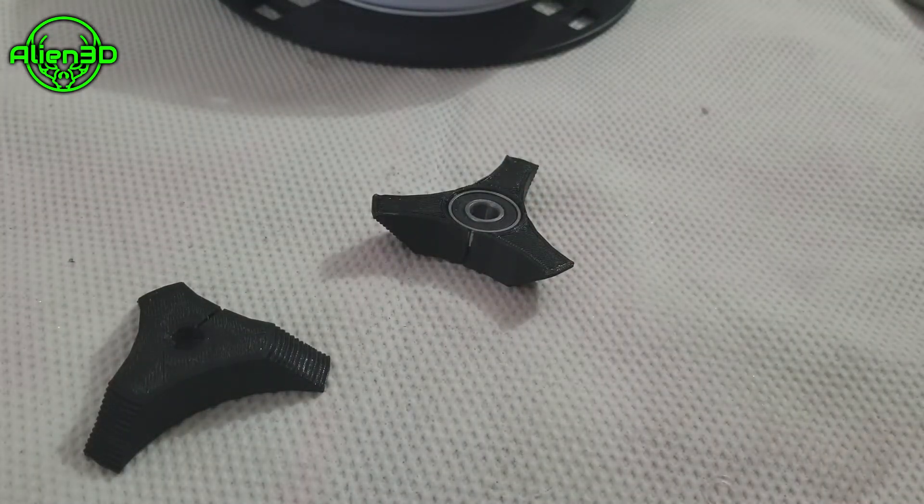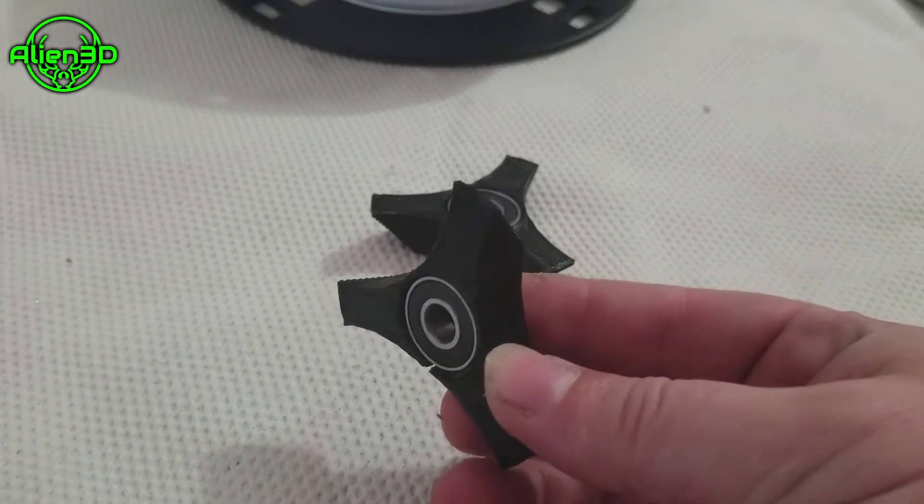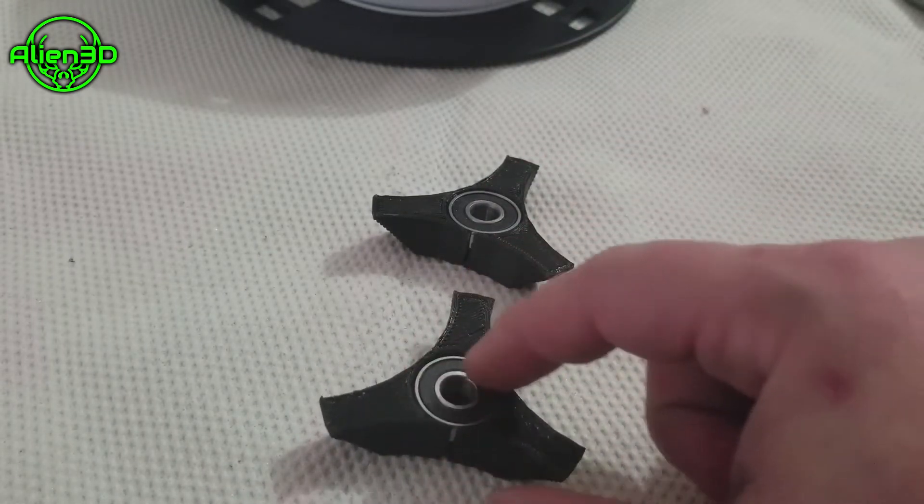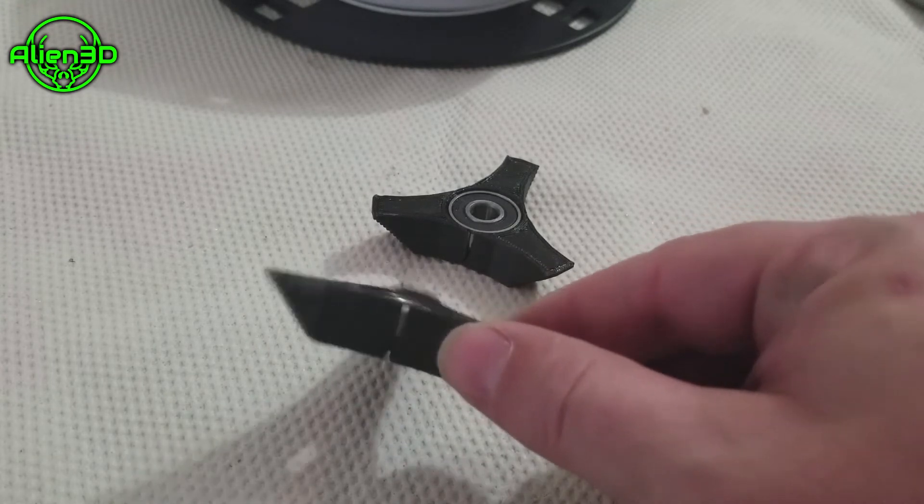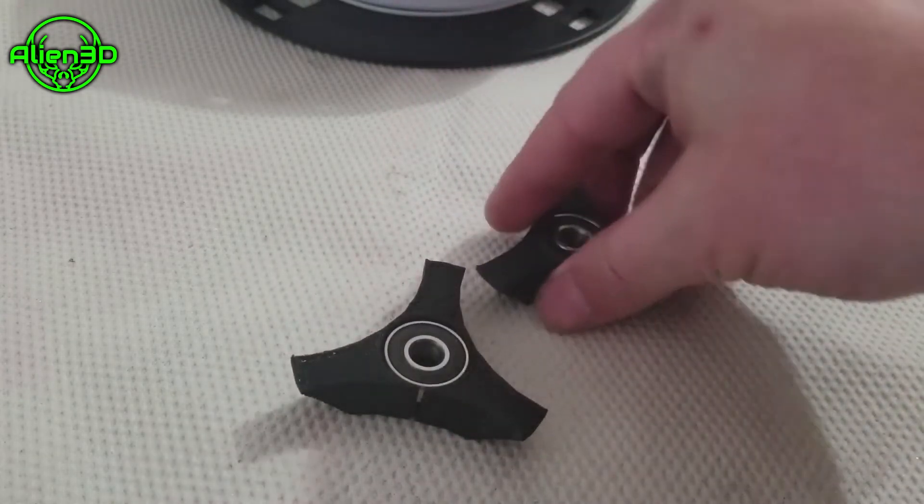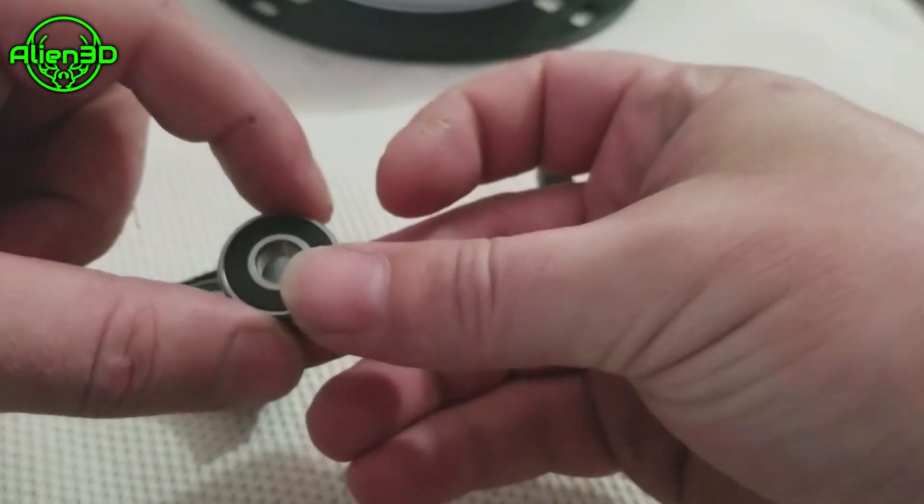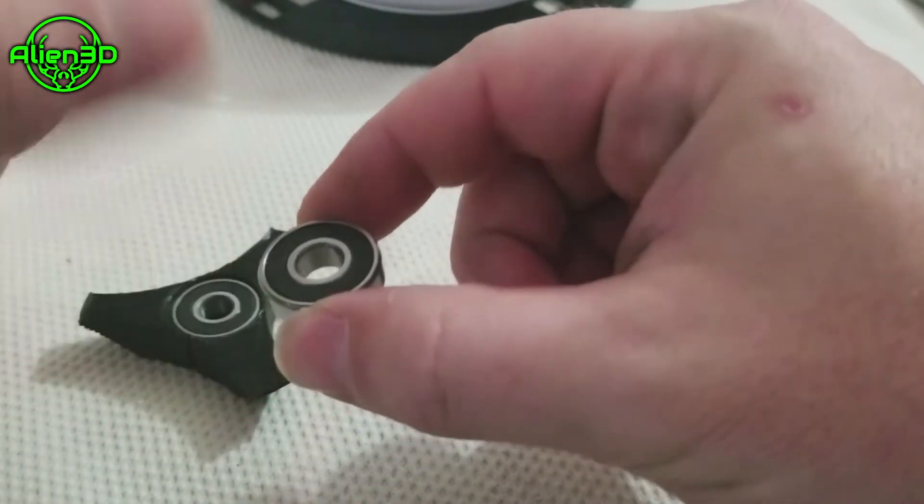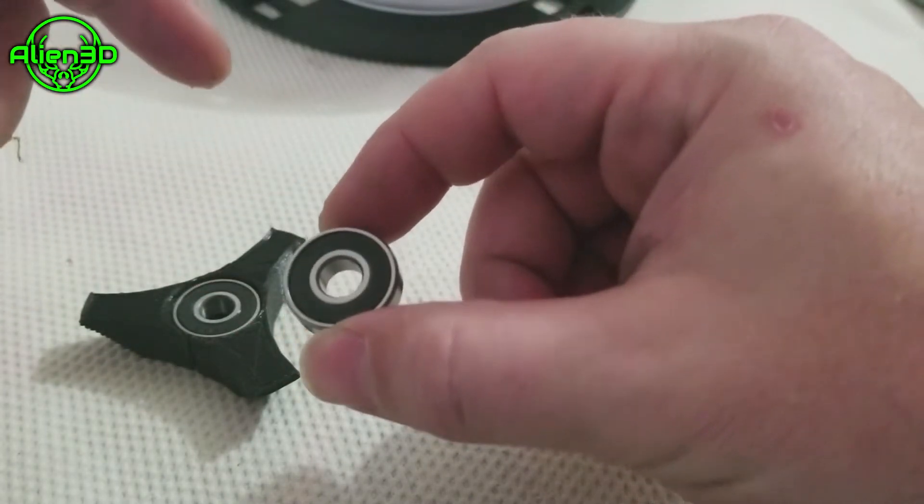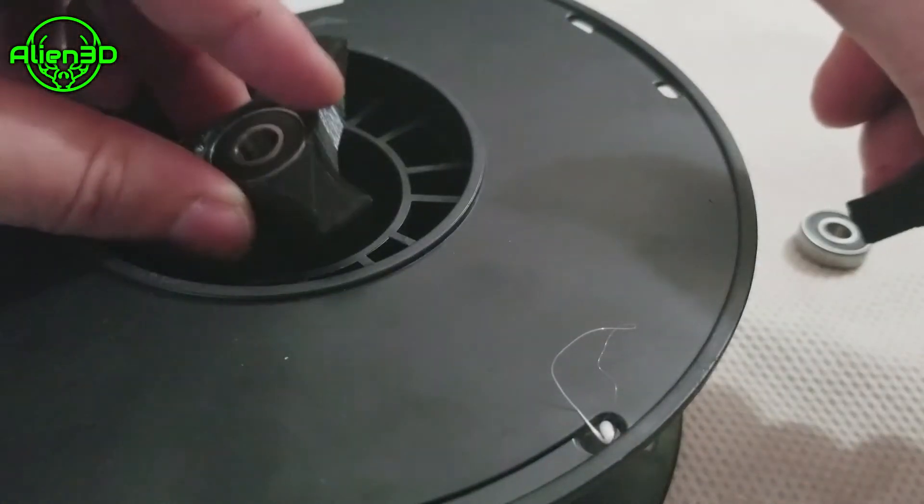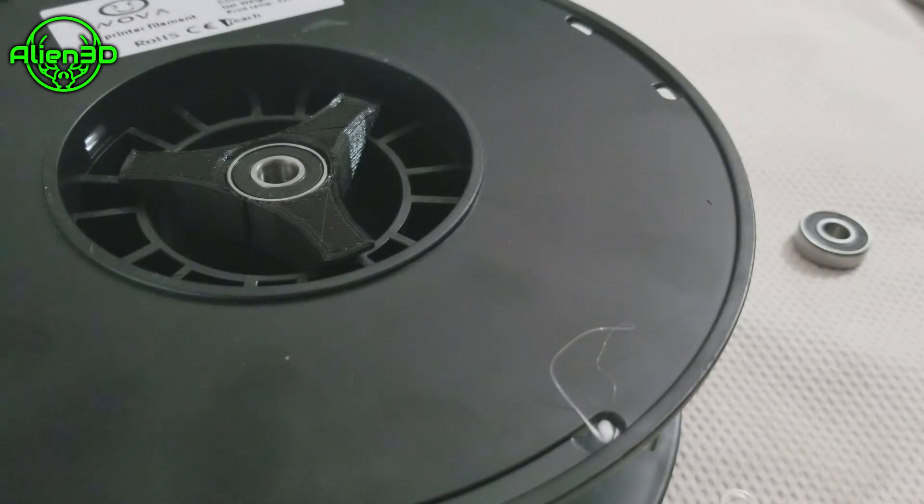So while those are drying I'm going to put together the spool. These are printed parts - I will put a link to my Thingiverse. Version 2 has a little bigger diameter so they push in easier. I have them on my other spool at the moment. You just take the bearings - these are 8 millimeter center, 7 millimeter tall, 22 millimeters diameter - and push those in.